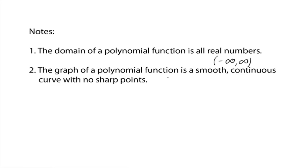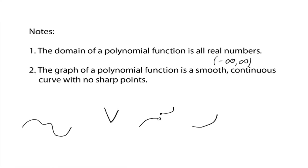The graph of a polynomial function is a smooth, continuous curve with no sharp points — nice and smooth. There can't be any sharp points, there can't be any breaks in it, nor can there be any asymptotes in it.